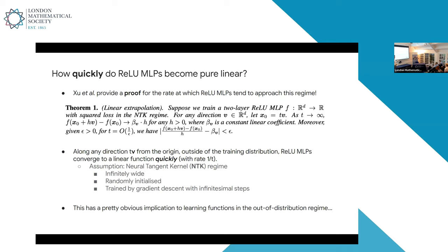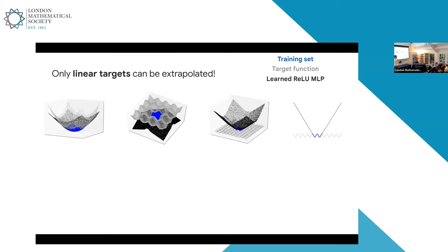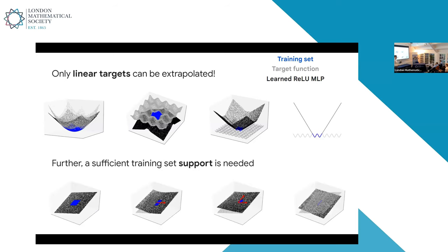These models very quickly converge to linear once you escape the training data. The obvious implication is: if your targets are not linear, there's nothing to look for. Here are a few visualizations. In blue is the training set, gray is the target function, and black is where the ReLU MLP learns. The moment you veer even slightly outside of the range of the training set, this thing becomes linear. So unless your target function is linear, there's no way it's going to extrapolate. It's not just sufficient that the target is linear — you also need sufficient training set support in all directions. If you only cover one quadrant of the directions, it will learn a wonky linear function. But if it has sufficient support, there is actually a fairly stable positive result saying you can learn it over a wide range of hyperparameters.